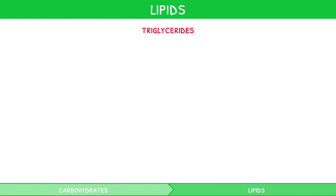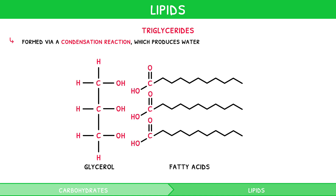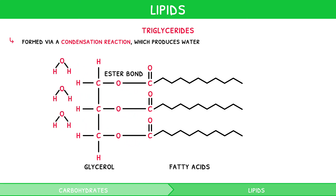Like polysaccharides, triglycerides are formed via a condensation reaction which produces water — another anabolic reaction. You are expected to draw this and identify the ester bonds present. Draw a glycerol molecule with three fatty acids to its right, ensuring the carboxyl group of each fatty acid is adjacent to a hydroxyl group on the glycerol. These two groups then combine to form an ester bond. Therefore, a total of three bonds are formed, also producing three molecules of water.